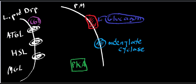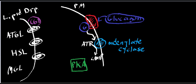The glucagon receptor is a G-protein receptor. The G-protein alpha subunit is going to move along the membrane and activate adenylate cyclase. When adenylate cyclase gets activated, it's going to convert ATP into cyclic AMP. I'll come over here and draw that structure.